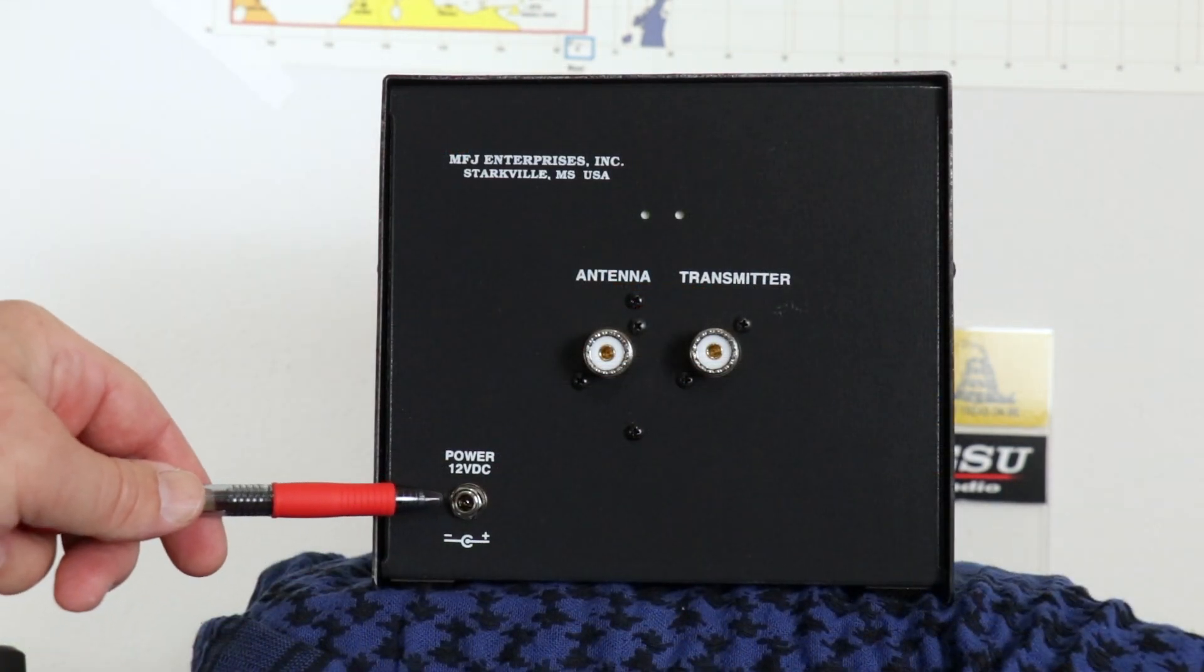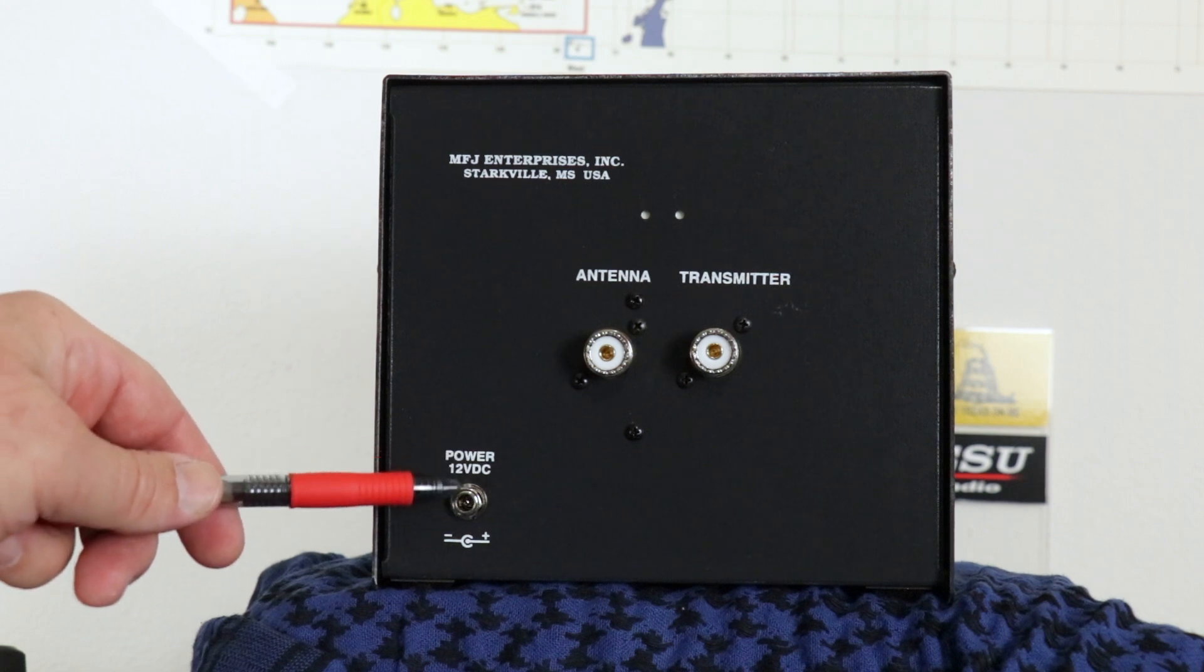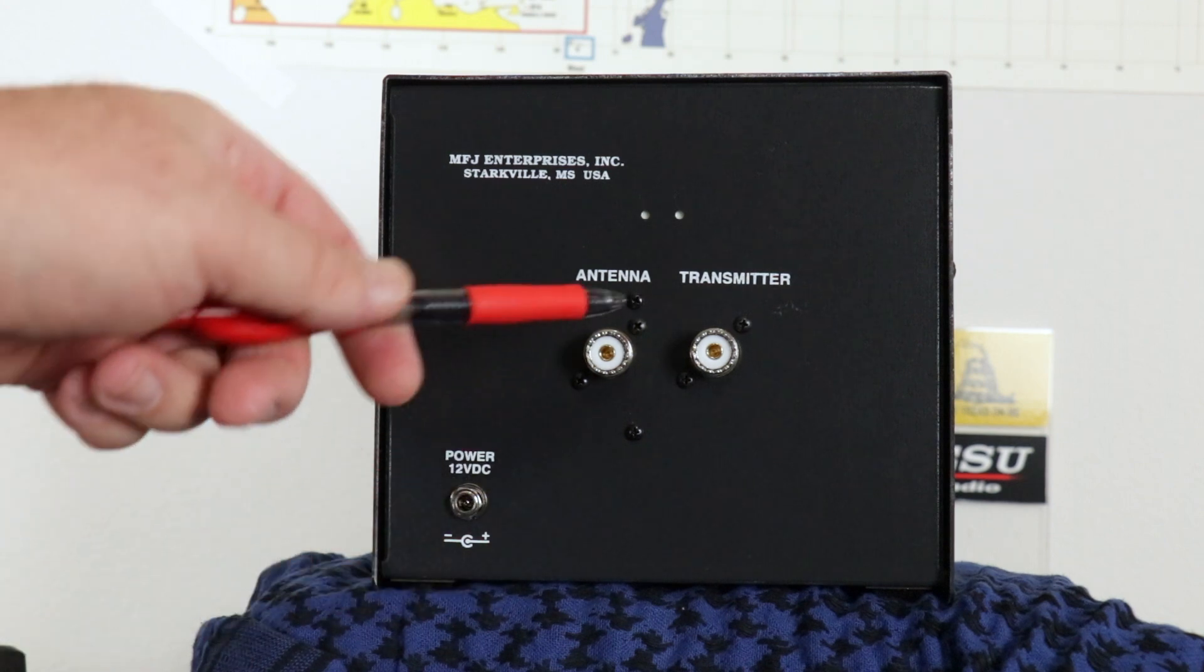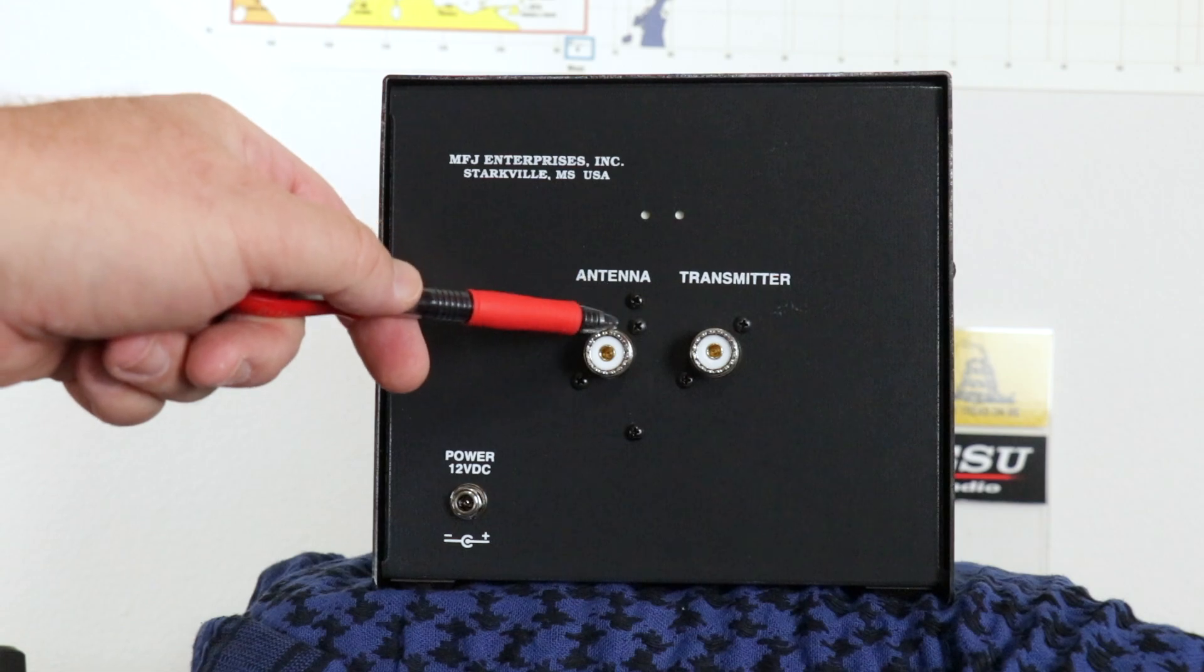You must use power for this meter to work, and it does come with the cord. Then you have from the transmitter and out to the antenna.